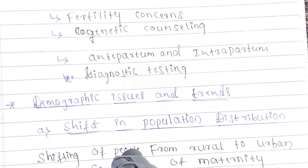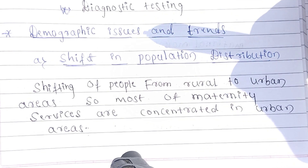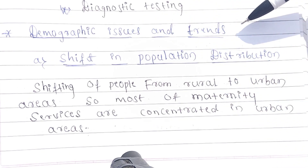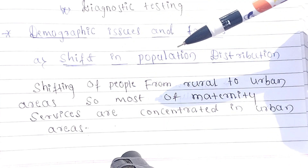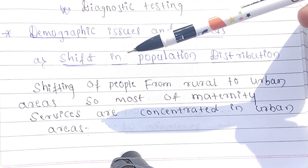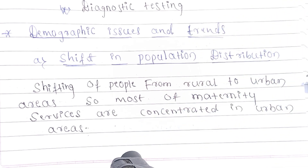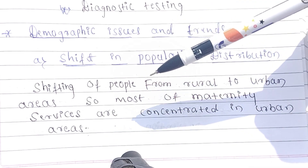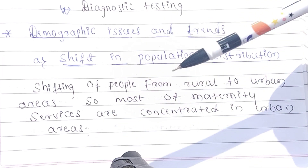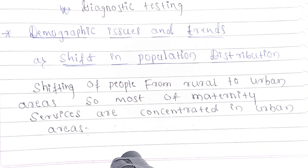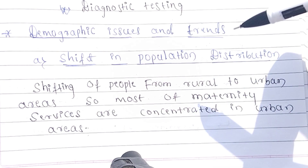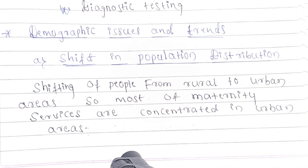The third trend is demographic issues and trends. Demography refers to population. One key issue is the shift in population distribution — the shifting of people from rural to urban areas. Most maternity services are concentrated in urban areas, so people move from rural to urban areas to access better facilities.